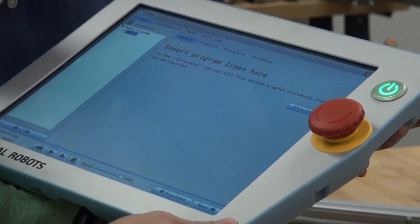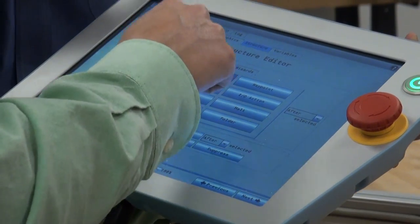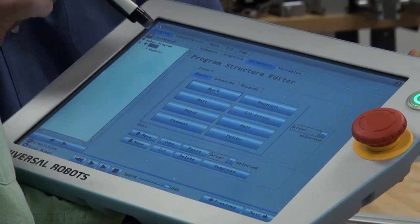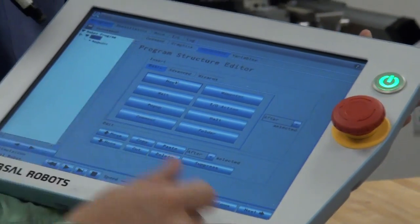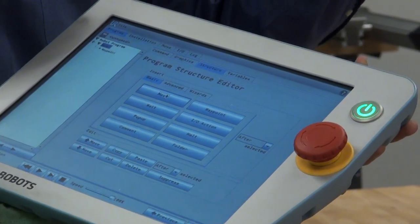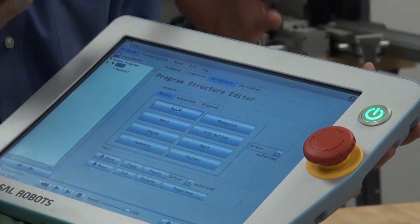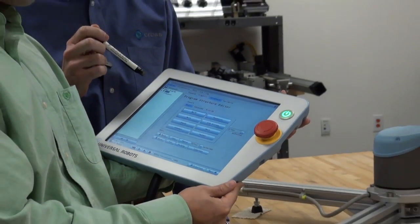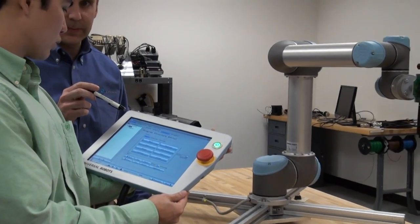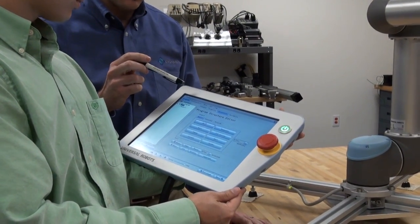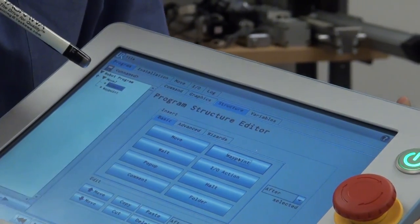All right. So, starting out, what we're going to do is create a move. So, go ahead. Just like that. You can see over here in your program tree that it set up a move J. J signifies joint. So, each one of these is a joint on the robot and they can be moved individually or in concert with one another. So, from here, what we're going to do is create a waypoint. All right. So, that's going to be a point in space that we want the robot to be able to go to. So, go ahead and select waypoint.